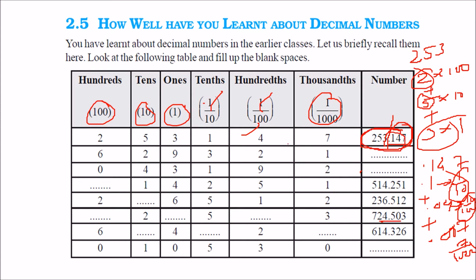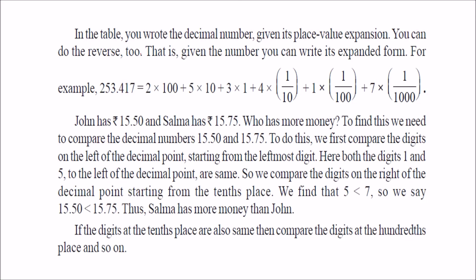You will encounter these decimal numbers throughout. The place values go: ones, tens, hundreds on the left; and 1 by 10, 1 by 100, and 1 by 1000 on the right side of the decimal point.